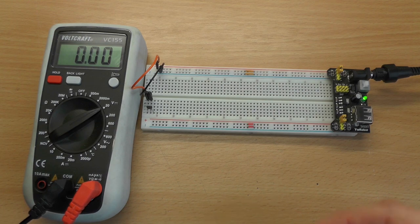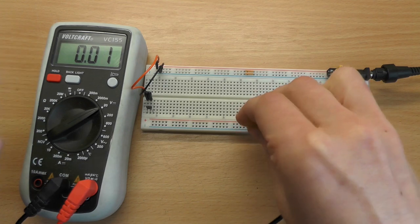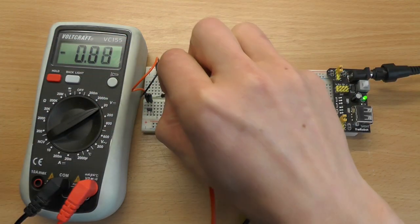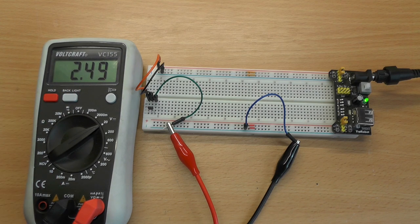So we can take this voltmeter, connect this between ground and the output pin, and then we can see we get two and a half volts.